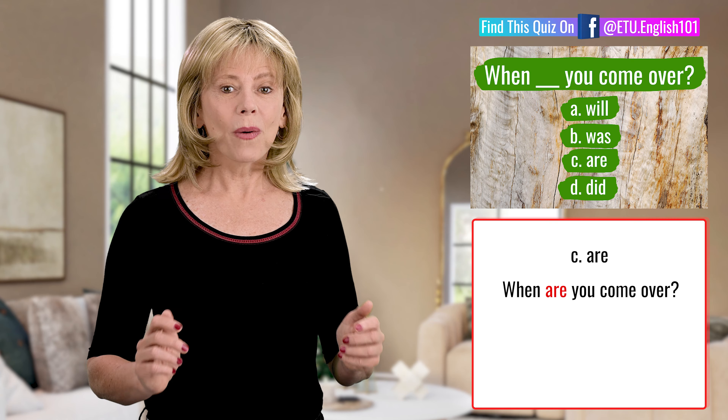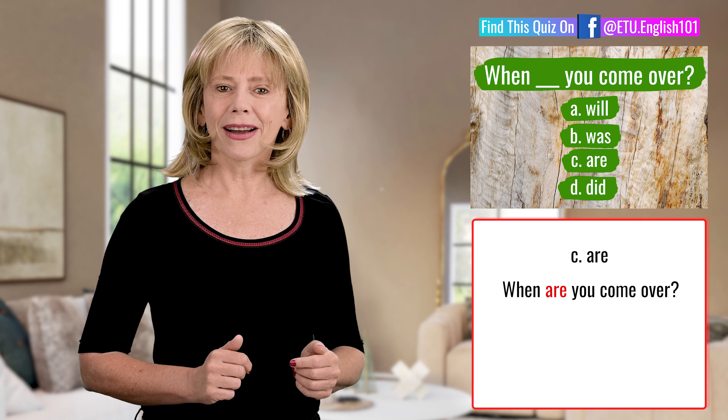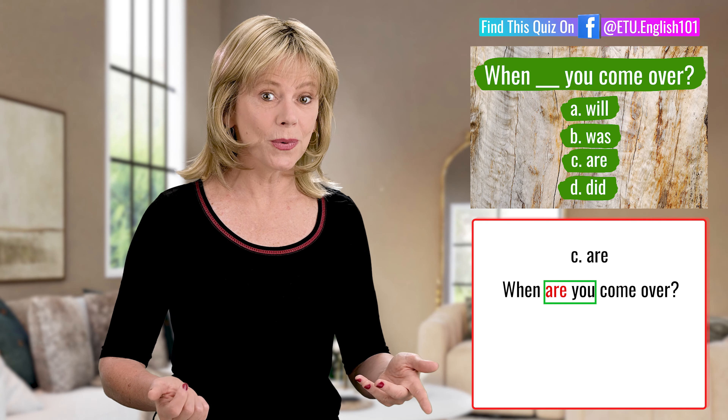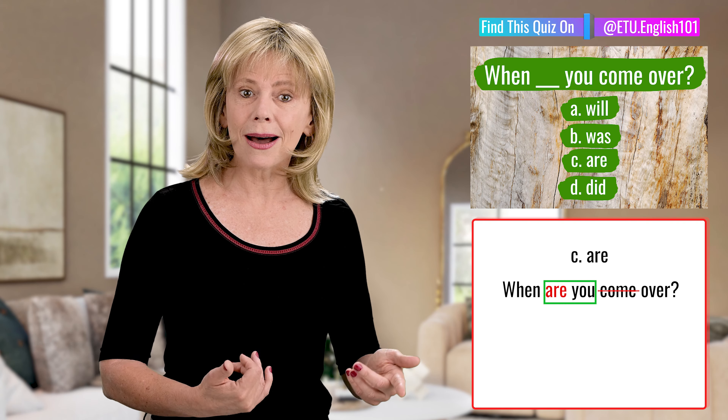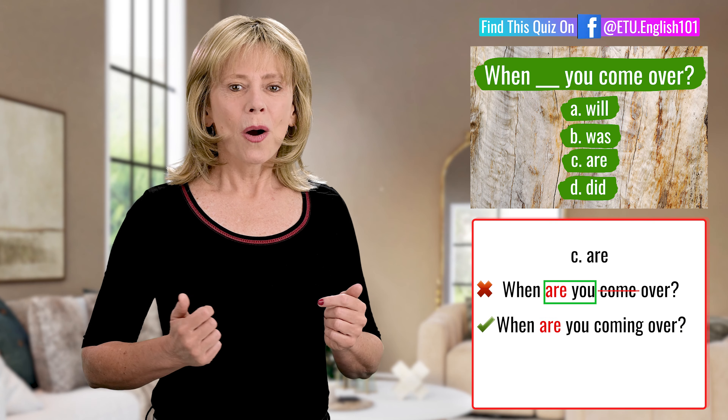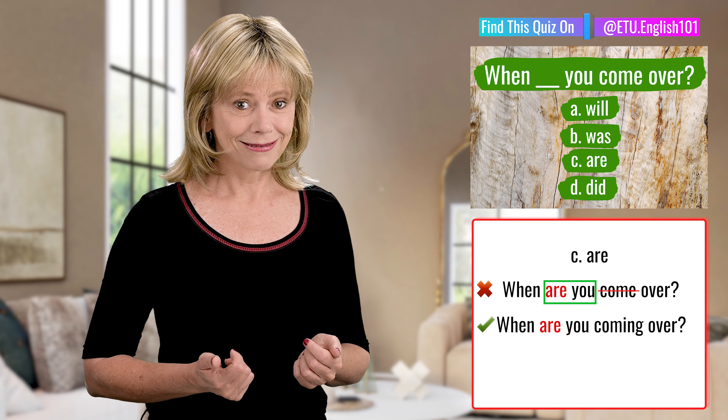Choice C: are. This makes the question, 'When are you come over?' When are you come over starts well because it combines 'you' with 'are,' but it goes wrong because the word 'come' has to change into 'coming' for correct grammar. We say, 'When are you coming over?' We don't say, 'When are you come over?'